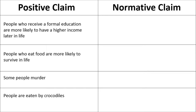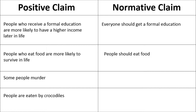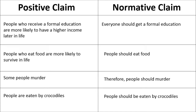Now let's have a look at their corresponding normative or 'ought' claims. Everyone should get a formal education. People should eat food. Therefore people should murder. And lastly, people should be eaten by crocodiles.